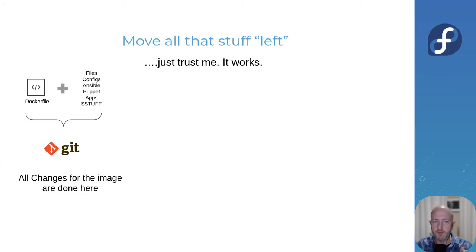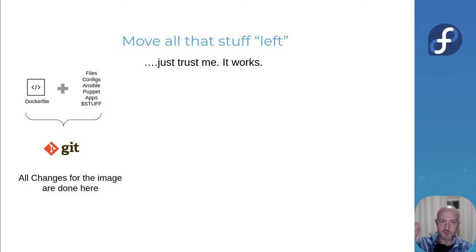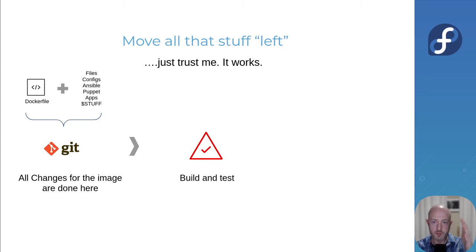So let's walk through what this can look like. The center of gravity for Bootc is a Containerfile — you may know it as a Dockerfile; same thing. That is the instruction for what goes into your image. Within that you can pull files, configs, you may run Ansible, really whatever you want. We're going to version and modify that with Git. There can be more complicated things where you pull applications or artifacts from Maven or similar — I'm simplifying to keep this manageable. The idea is to version everything in Git and then build and test.